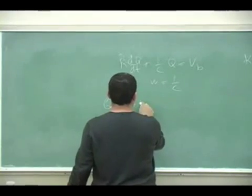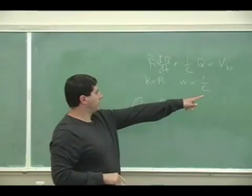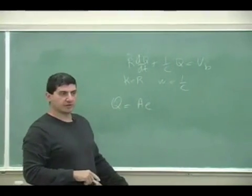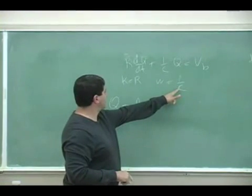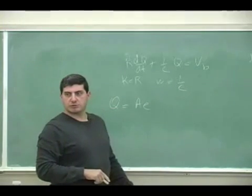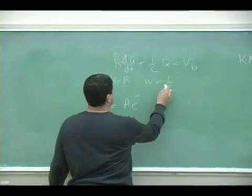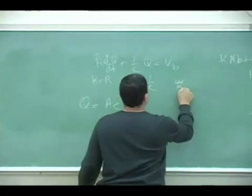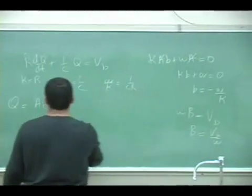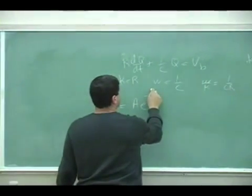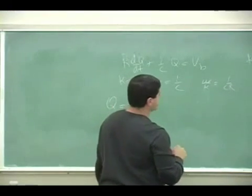E to the—what's B got to be? B has to be minus W over K, right? So W minus W over K, that's going to be negative 1 over RC, right? W over K makes this 1 over CR, right? And then so it's going to be negative B over K, so negative 1 over RC times T plus...